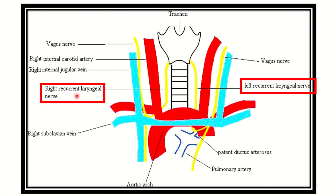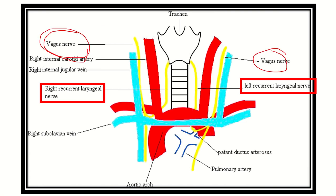The right recurrent laryngeal nerve is present in the upper part of the chest, while the left recurrent laryngeal nerve enters deep into the chest wall cavity. Looking at the origin, we can see this is the vagus nerve — so the recurrent laryngeal nerve arises from the vagus nerve.